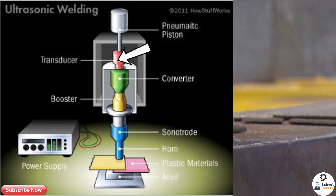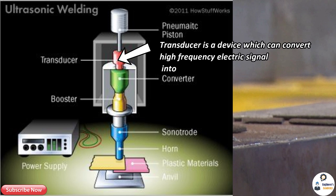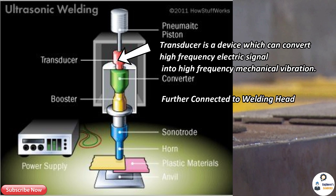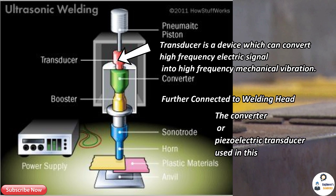Second is the transducer. A transducer is a device which can convert a high frequency electric signal into high frequency mechanical vibration. This is connected with the welding head. The converter or piezoelectric transducer is used in this welding process.